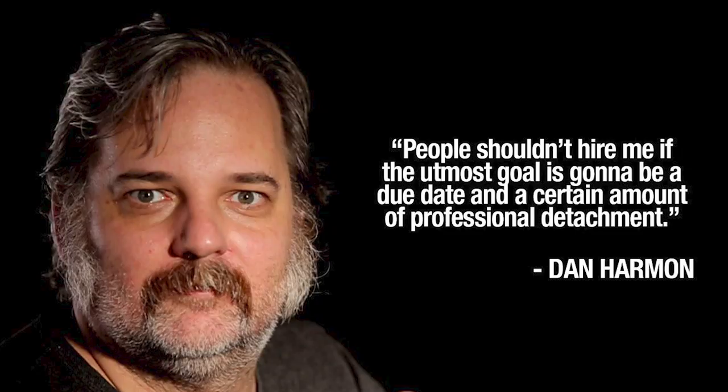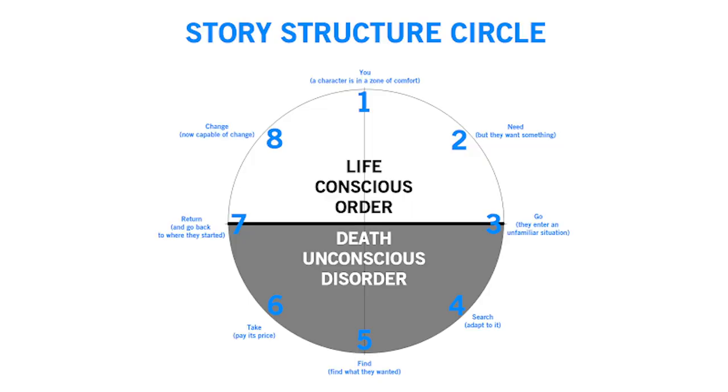Dan Harmon, the creator of Rick and Morty — which we mention every episode because it's the most successful western adult animated series — created the Story Circle, which added some new variations to the concept. It defined the first and last quarters of the story's arc being spent in the original setting, and the second and third quarters as chaos, forming the journey. Dan doesn't adhere to his story circle religiously, and neither should you.